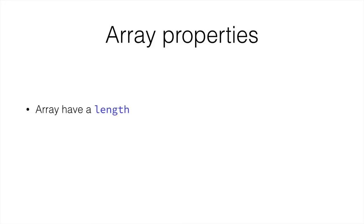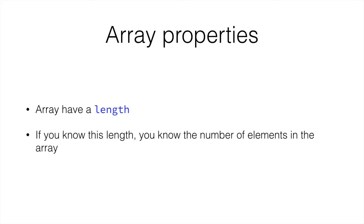What are the array's properties? Arrays have a length. This is the number of elements that is in the array. If you know this length, then you know the number of elements in the array.